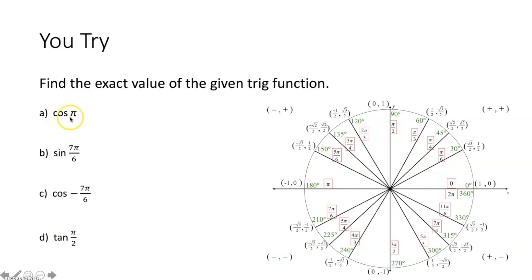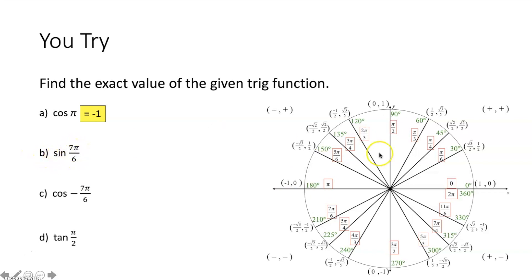Now doing the same thing. First, evaluate cosine of π. We locate π radians on the unit circle — that's right there, equivalent to 180 degrees. Cosine equals the x-coordinate of the corresponding point. The point negative 1 comma 0 corresponds with π radians. Therefore, cosine of π equals negative 1. To evaluate sine of 7π over 6, we locate 7π over 6 on the unit circle — equivalent to 210 degrees. Sine equals the y-coordinate, so if the point is (negative √3 over 2, negative 1 half), sine of 7π over 6 equals negative 1 half.